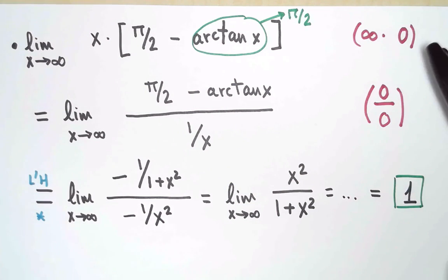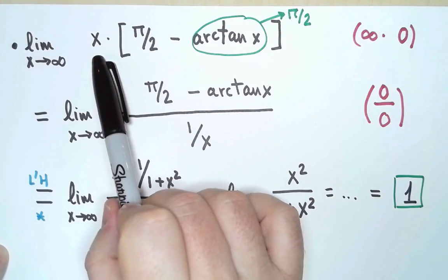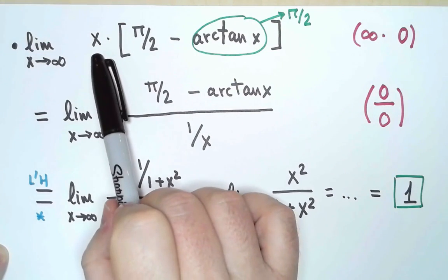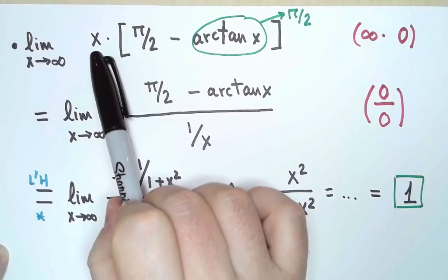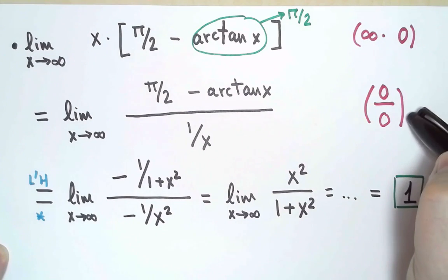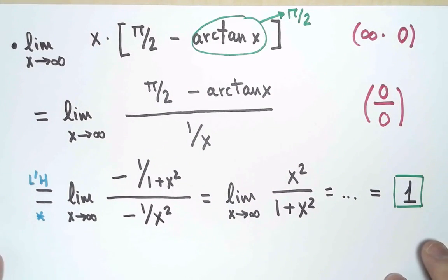The trick of how to rewrite 0 times infinity as a quotient is always going to work, because no matter which functions I have here, you can always rewrite any function f as 1 over 1 over f. And then if the limit of the original function was 0, the limit of 1 over f will be infinity, plus or minus. And if the limit of the original function was infinity, the limit of 1 over the function will be 0. So any type 0 times infinity can be rewritten as a quotient, 0 over 0, or infinity over infinity, on which you can use L'Hôpital's Rule.